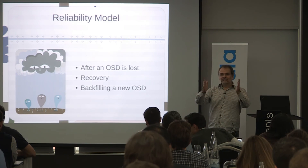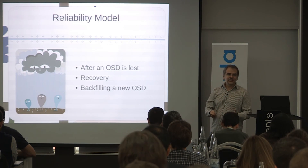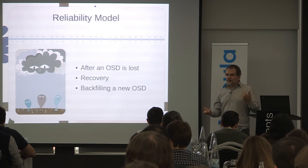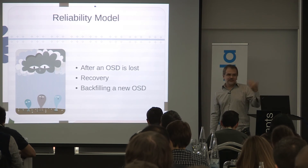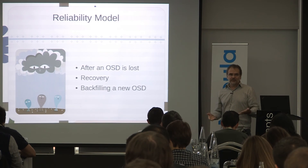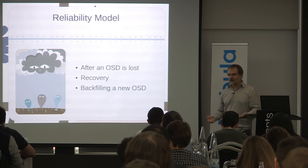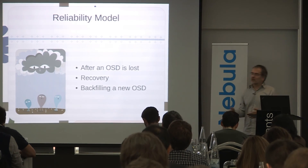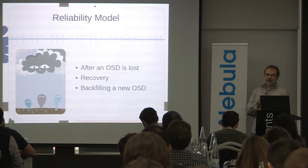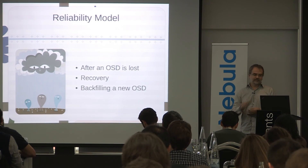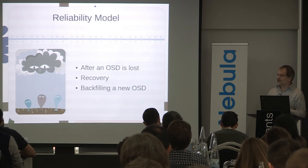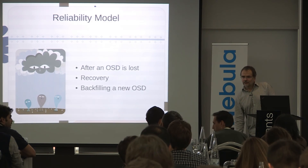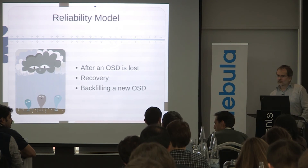There is no easy mathematical formula for this, but it's not too difficult to think about. There is a page that explains how to reason about it, and although it takes a few hours, it's not a matter of days. That's what I wanted to say about reliability models and erasure coding — it's not extremely specific. I think I'm out of time. We can go to questions.